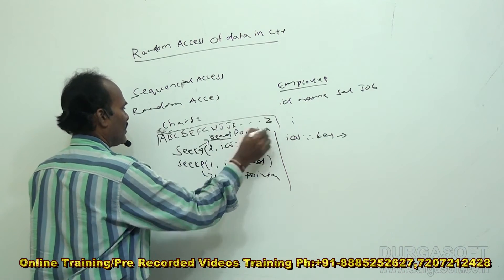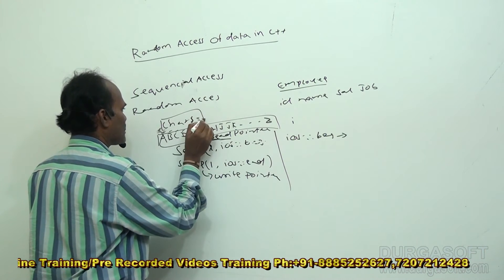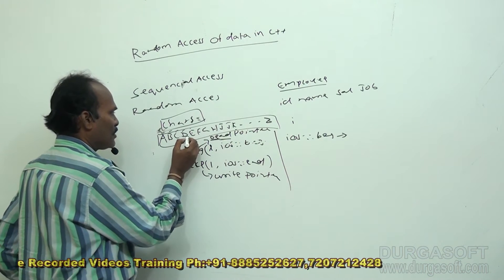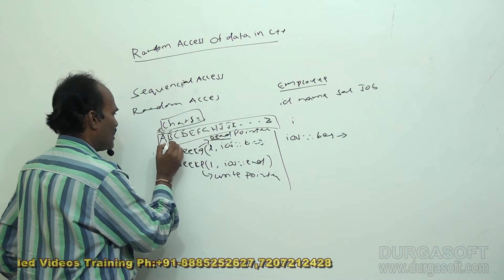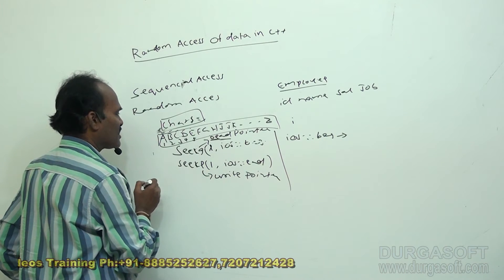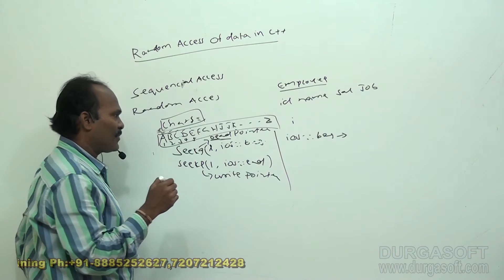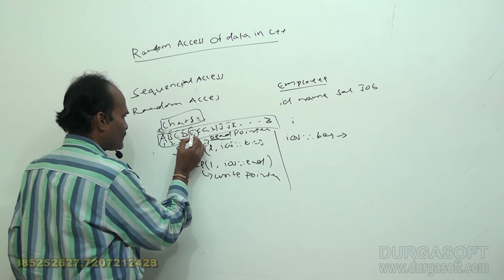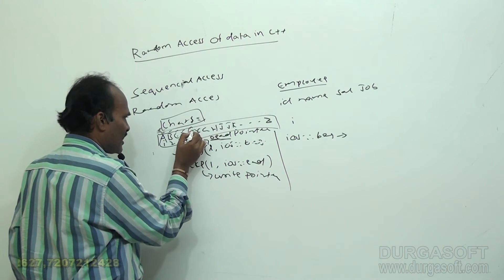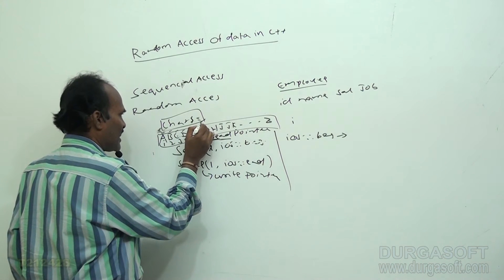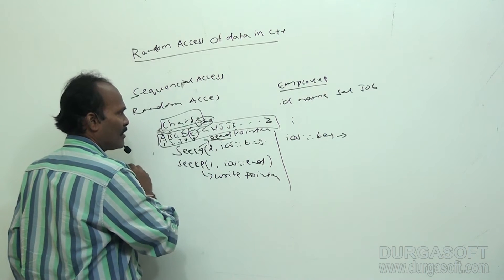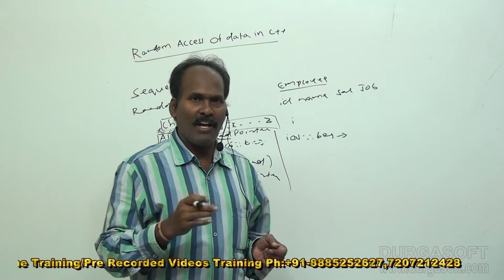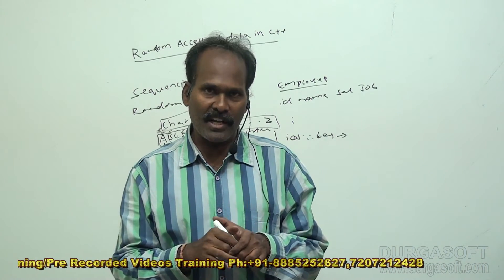If you want to write a character at a particular position, use the seekp function. Consider uppercase letters stored in a chars data file. If I want to read the 5th character directly, I move the file pointer to the 5th location. If after position E I want to replace some other characters, I make use of the seekp pointer. seekp is used especially for writing a character or set of characters at a particular position.